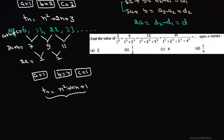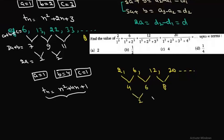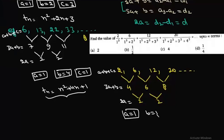Now we find the sum of a series up to infinite terms, computing the sum up to n terms first. The numerator series is 2, 6, 12, 20, .... Differences are 4, 6, 8, and difference of differences is 2, 2 — constant. Using the shortcut: 2a = 2, so a = 1. Then 3a + b = 4 gives b = 1, and a + b + c = 2 gives c = 0. So the nth term is n² + n.